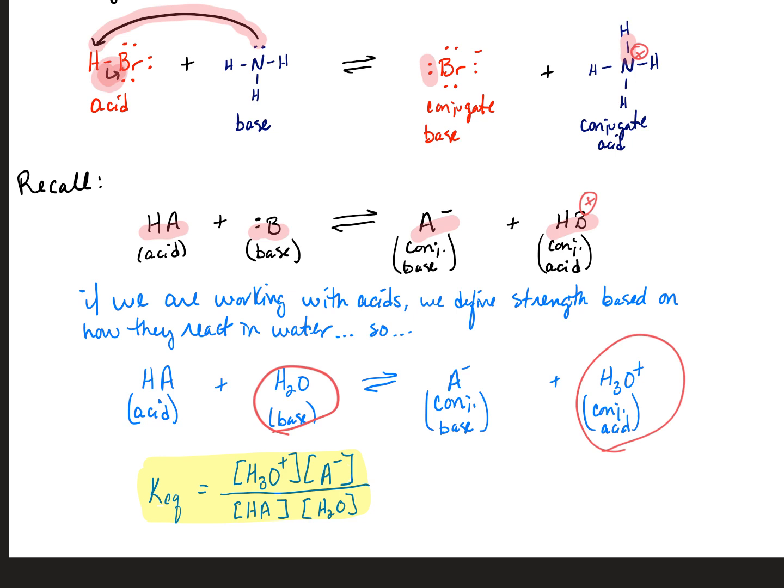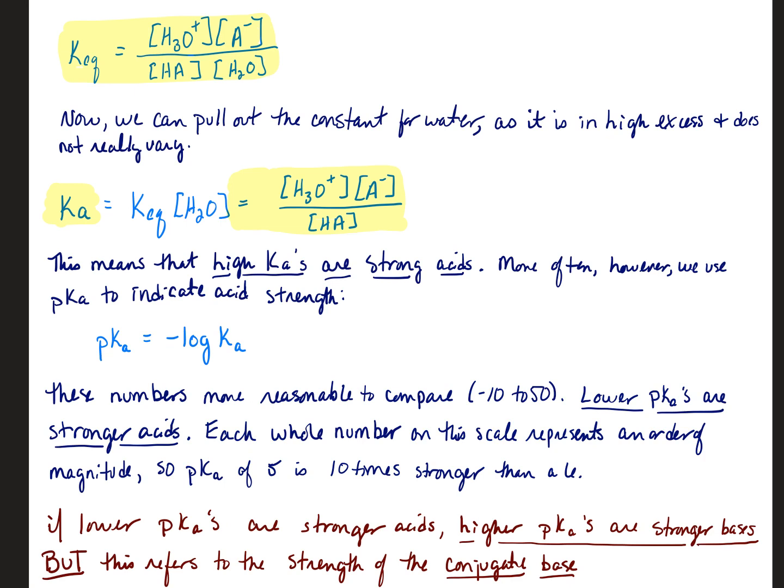So we can look at KEQ, which you may already recall from past chemistry classes, as being defined as products over reactants. So here we would have the product being H3O+ times the concentration of A- divided by HA and the concentration of H2O. Well, I went ahead and transcribed this to the top of the next page so we can discuss that some more.